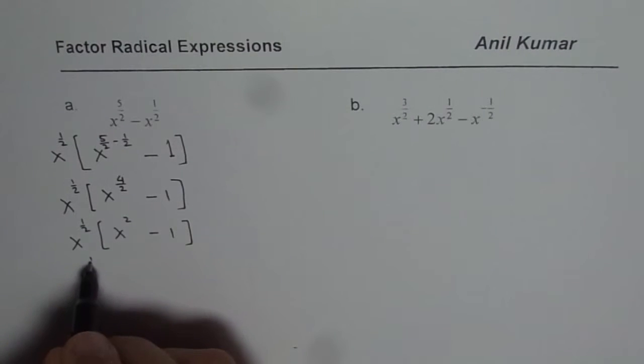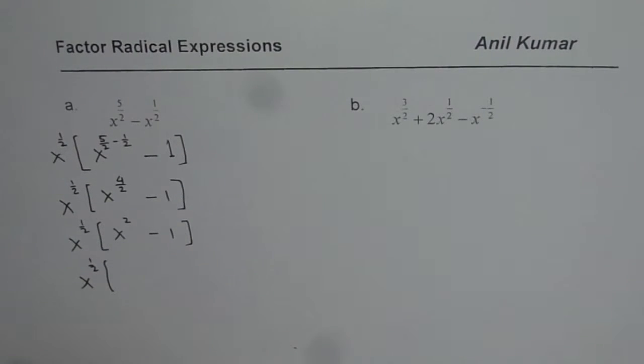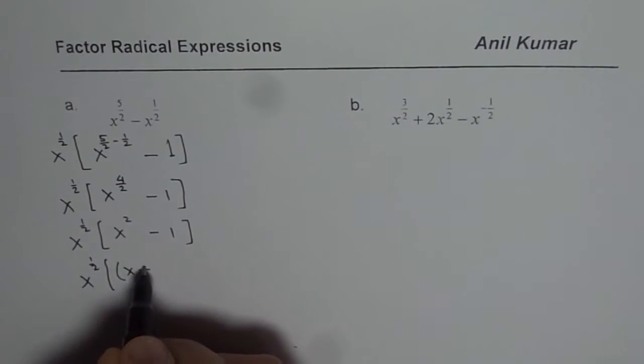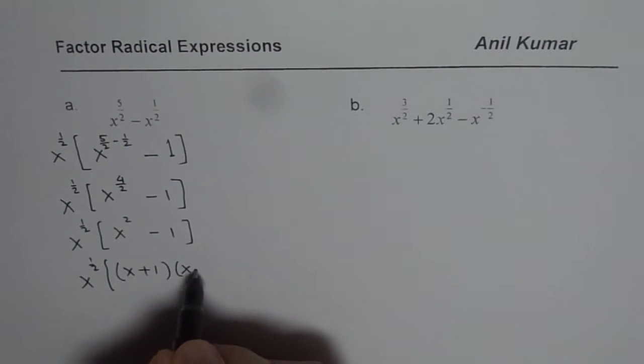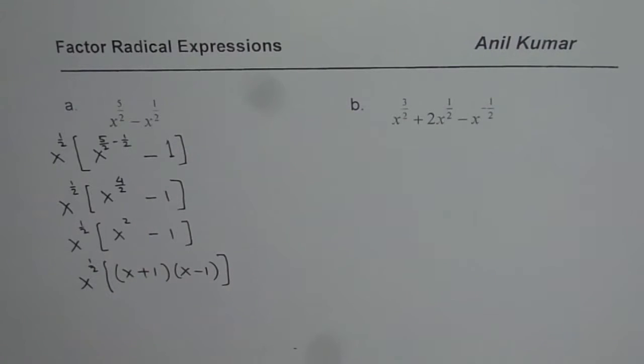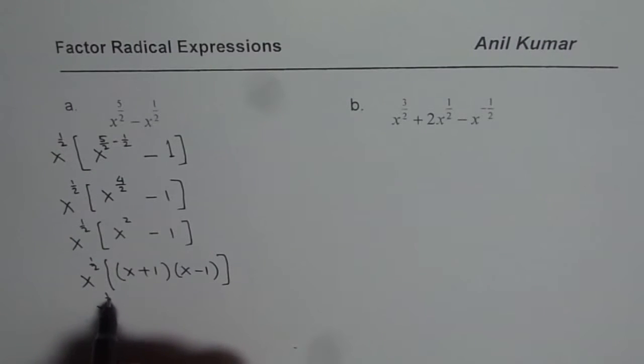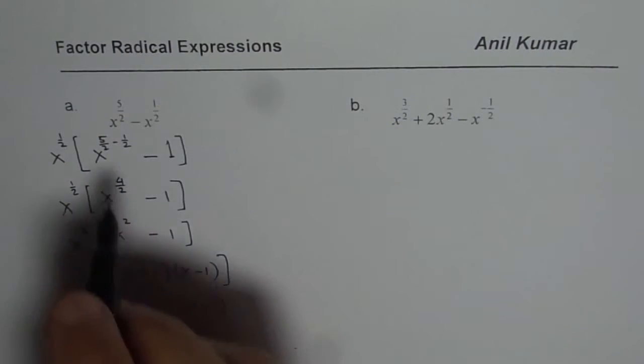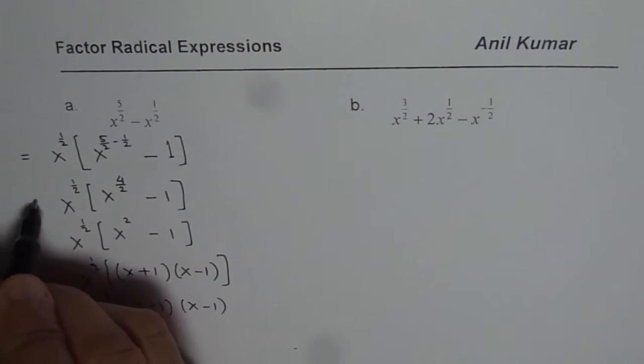So it is x to the power of half, and this is difference of squares. So I could factor this as x plus 1 times x minus 1. Now my given expression is fully factored. So I could write this as x to the power of half times x plus 1 times x minus 1. So that is how we can factor the given expression.